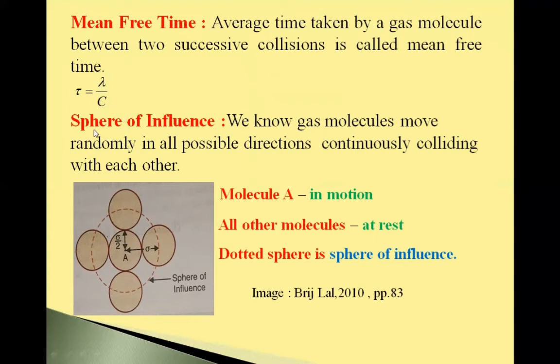We will see sphere of influence. Gas molecules move randomly in all possible directions and they continuously collide with each other. See here in this figure diagram, molecule A is shown here. Its radius is σ/2. And other molecules also shown here.